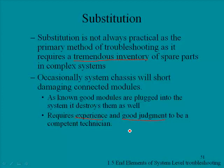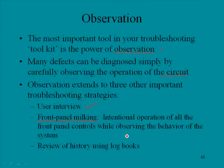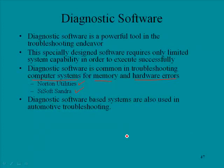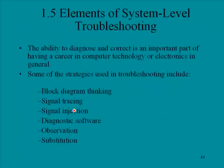In Section 1.5 we've addressed the elements of system level troubleshooting. We looked at substitution, observation — remember your senses can tell you a lot — diagnostic software used primarily in computing but also in the automotive and other industries, signal tracing, and block diagram thinking. That concludes elements of system level troubleshooting, Section 1.5.